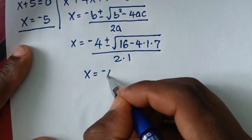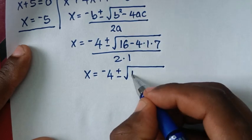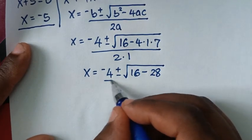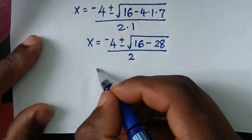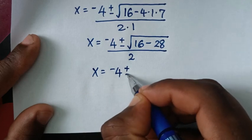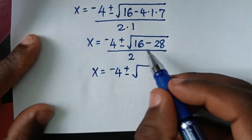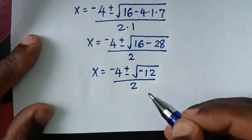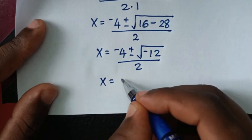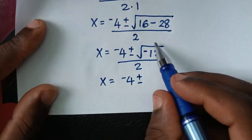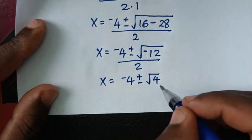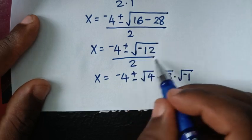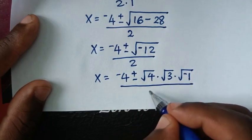This gives x = −4 ± √(16 − 28) / 2 = −4 ± √(−12) / 2. Now √(−12) is the same as √4 × √3 × √(−1), which is 2i√3.